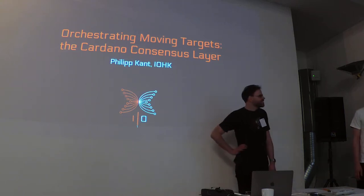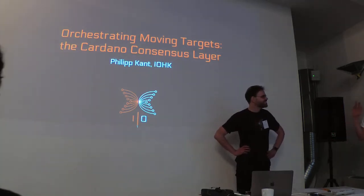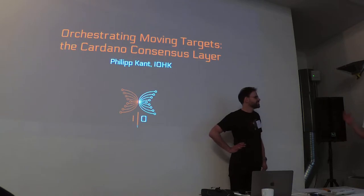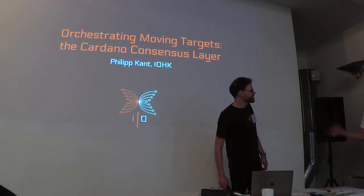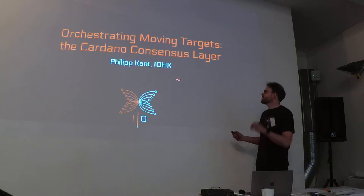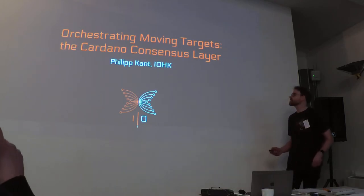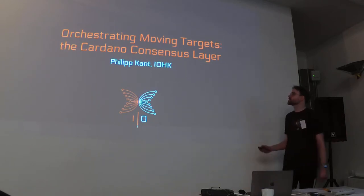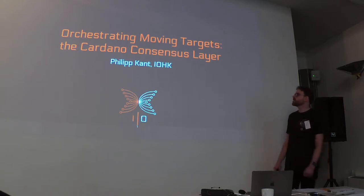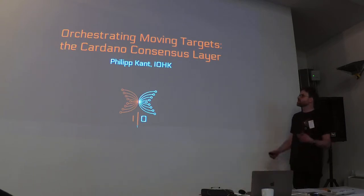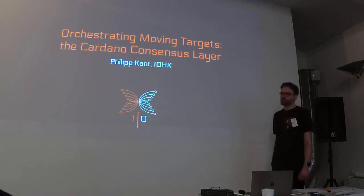Welcome again to another talk. I'd like to introduce Philip Kant, working at IOHK, and he's going to be talking about a part of the consensus layer of Cardano. I'm Philip Kant, and I'm going to tell you about the techniques we use to set up the architecture for our system Cardano — a blockchain hosting the currency ADA — in a way where we can swap in and out individual layers and have it modular and extensible.